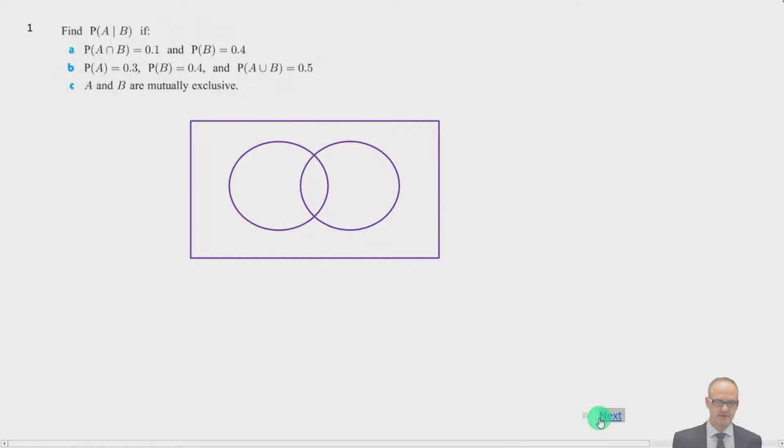Alright, let's look at some examples. We want to find the probability of A given B if P of A intersect B is 0.1. Let's draw our A and our B. We know the intersection is 0.1 and we know that the whole probability of B is equal to 0.4. So therefore this area where it's just B and not including A is 0.3. We could just use our formula. P of A given B is equal to the intersection over the probability of B. And that is just equal to 0.1 over 0.4 which equals a quarter or 0.25. Now I quite like drawing the Venn diagrams and realizing it from the Venn diagram. We see the total area of B here is 0.4, the bit with the A in it is 0.1. You do 0.1 divided by 0.4.